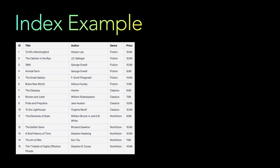Let's take an example. We have a table called 'books' with five columns: id, title, author, genre, and price. The id column is the primary key that uniquely identifies each book. Now if we want to find books by a specific author, we could scan the entire table, but scanning is one of the most expensive operations — especially on a distributed system with millions of records.